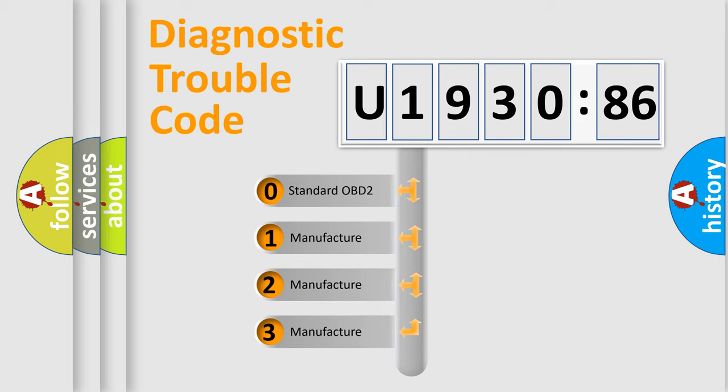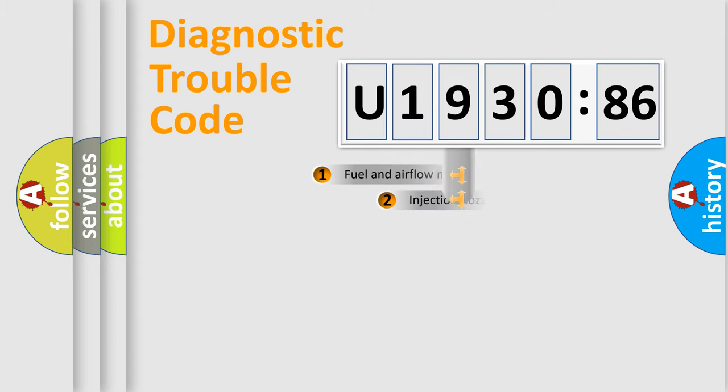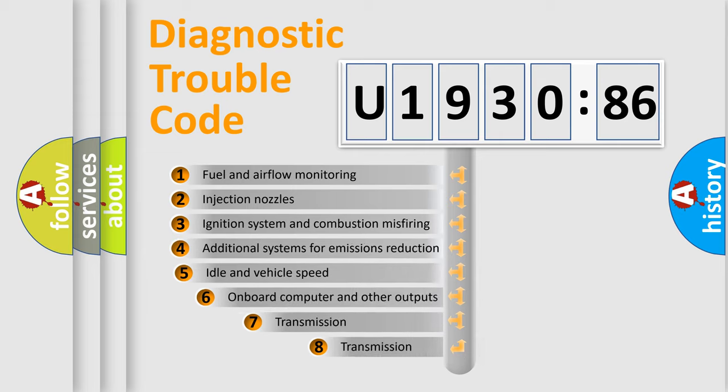If the second character is expressed as zero, it is a standardized error. In the case of numbers 1, 2, or 3, it is a more prestigious expression of the car-specific error.